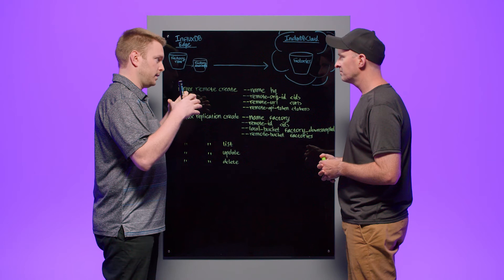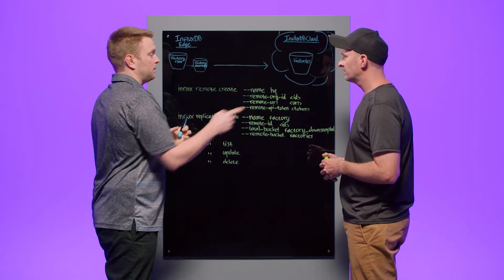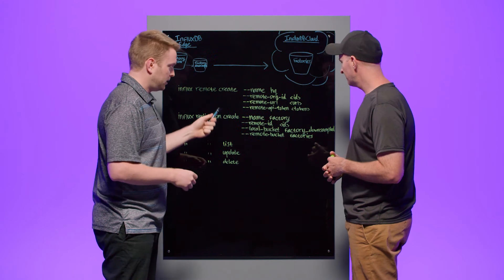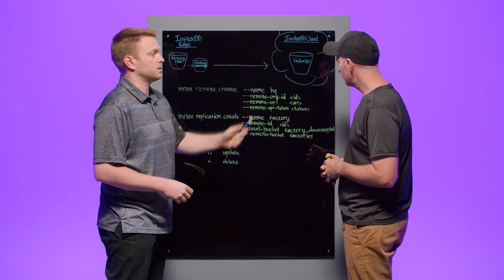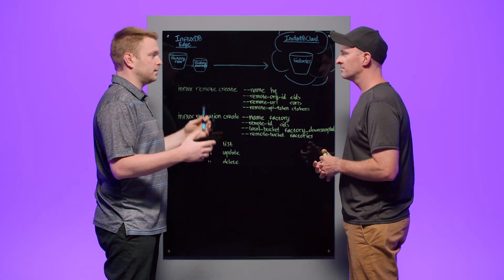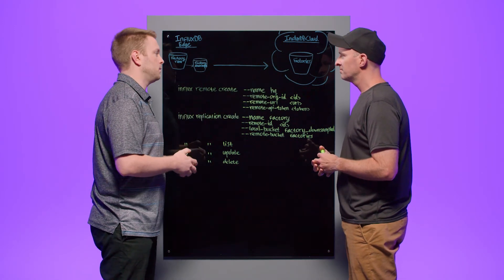Local bucket is I'm telling it which bucket locally I want to have replicated, which is factory downsampled right there. That guy right there, yeah. Exactly. Remote bucket is just the bucket that I want to target. So this is obviously singular. This one is named factories because I'm expecting that many factories are going to report data to it.